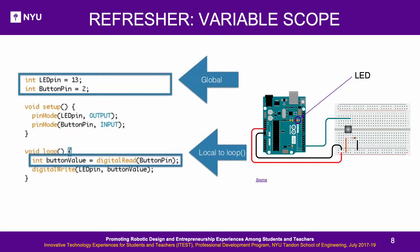Refresher — Variable Scope: Global and local variables function like the President and the Governor. The President has control over all states while the Governor's powers are limited to one state. Similarly, global variables can be used everywhere in the program, while local variables are only accessible within the function they are defined in.